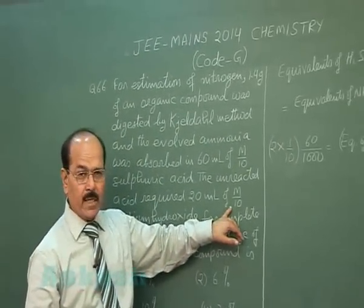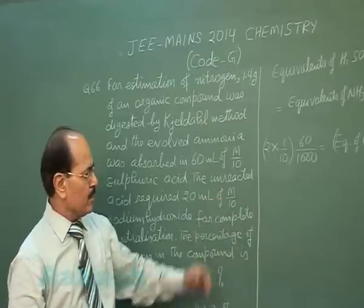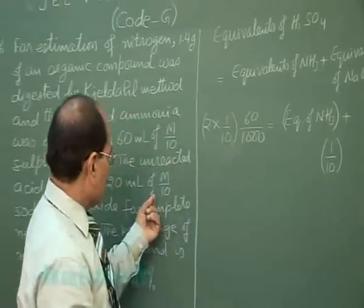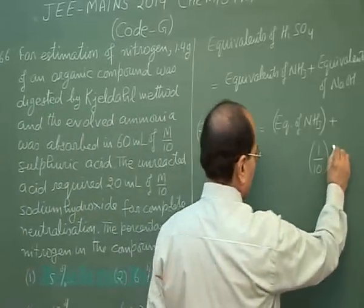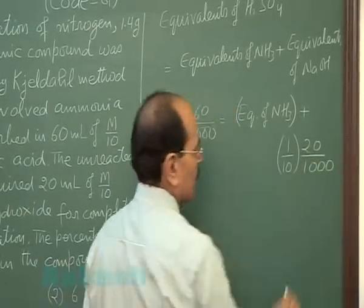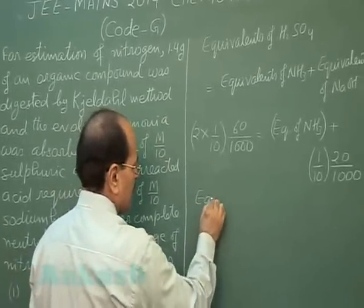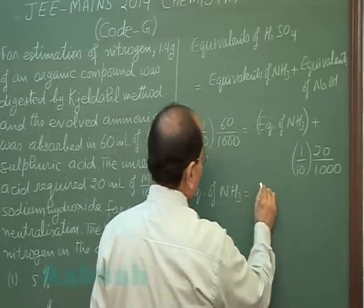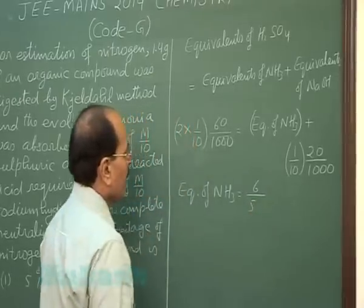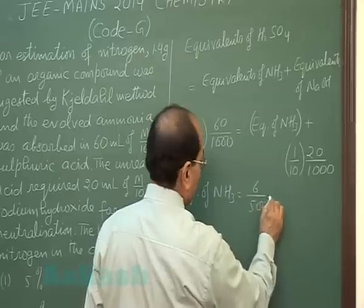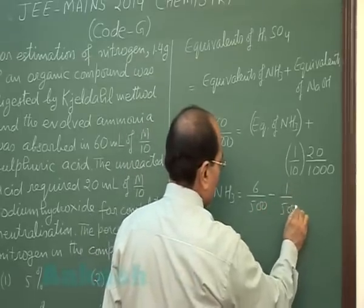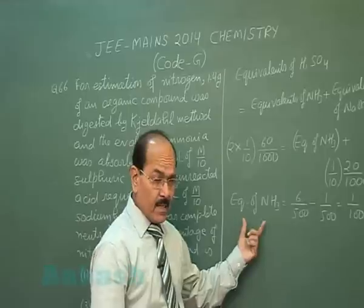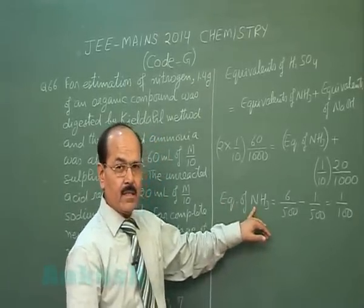The molarity of sodium hydroxide is 1/10 and its n-factor is 1, so its normality equals its molarity, that is 1/10. Equivalents of sodium hydroxide = (1/10) × (20/1000). The n-factor of ammonia is 1, so its equivalents equal its moles.